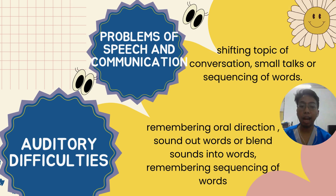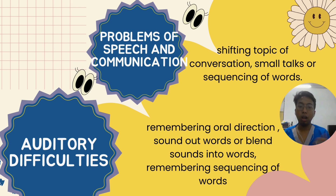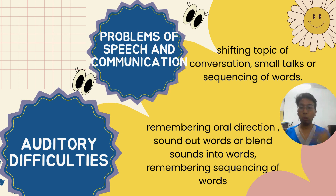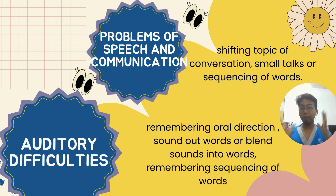The fifth type is problems of speech and communication. These children have difficulty when a conversation topic shifts — they tend to take time to catch up, or they have delays in sequencing words. For example, instead of saying 'I want to eat,' they might say 'I do want to eat' or 'I eat one.' The sixth type is auditory difficulties, where they struggle to remember oral directions, such as 'go to the left.'